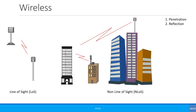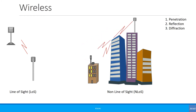Then there are reflections, where the receiver is receiving reflections from the transmitter — one or two reflections depending on conditions. There is also diffraction, where the signal from the transmitter gets diffracted and is received by the receiver. There is a differentiation between non-line of sight and near-line of sight: non-line of sight covers penetration, while near-line of sight covers reflection and diffraction.